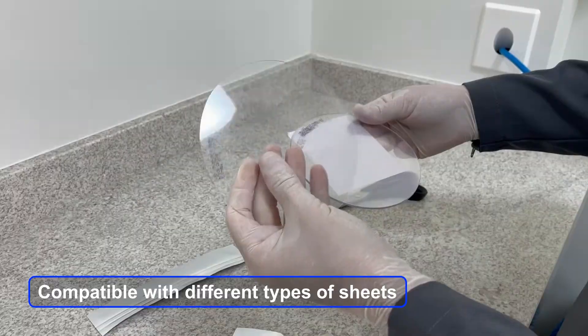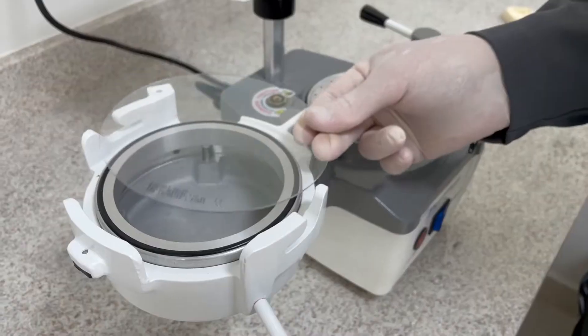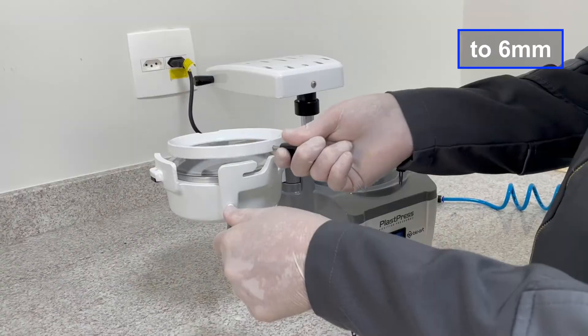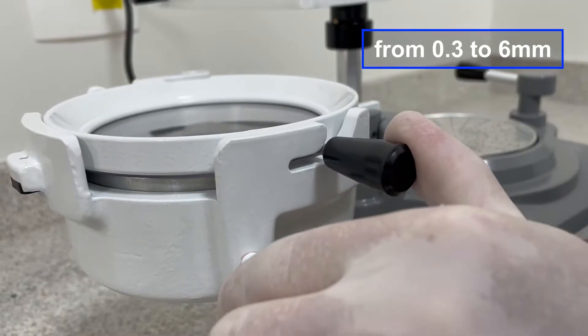Compatible with different types of sheets for round and square shapes, rigid and flexible from 0.3 to 6 millimeters.